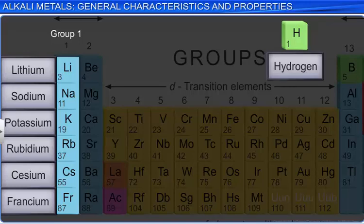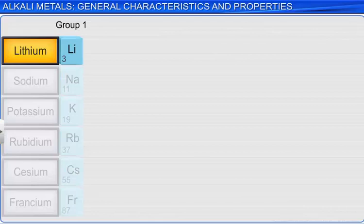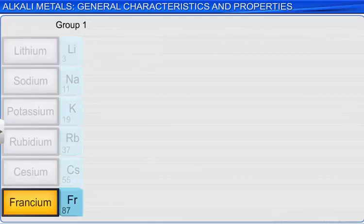Here are some interesting facts about the group 1 metals. Lithium is the most abundant member of the family. Francium is radioactive and its longest-lived isotope has a half-life of only 21 minutes.